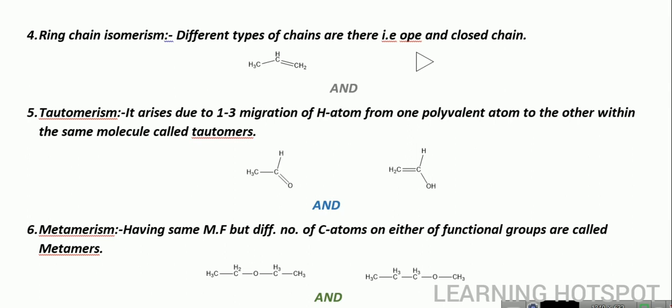After that, we have ring-chain isomerism, in which an open chain is converted into a cyclic chain, or the cyclic chain is converted into an open chain. So there are different types of chains: open chain and closed chain. There is one important point — in the open chain, we have one double bond, so that the number of hydrogen and carbon atoms remain similar. So focus on that double bond. If you have all single bonds, you can never form a cyclic one. Remember this point.